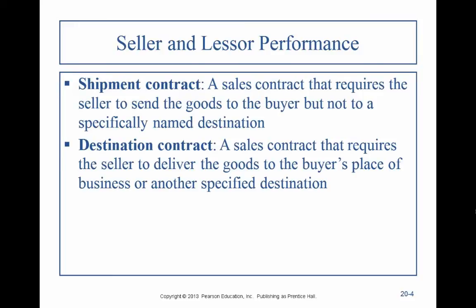In a shipment contract, risk of loss passes immediately when you deliver conforming goods. Under a destination contract, it's when the buyer receives the goods at their place of business or somewhere else. All review.